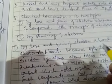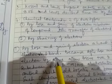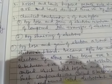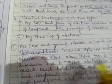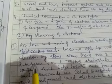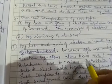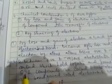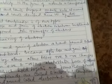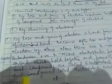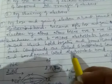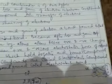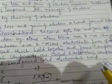A bond formed by loss and gain of electrons is called an electrovalent bond. After loss and gain of electrons, atoms possess positive and negative charges respectively. In between these positive and negative ions, an electrostatic force of attraction arises which holds them together and forms a compound. Such compounds are called electrovalent compounds and the bond formed is called an electrovalent bond.